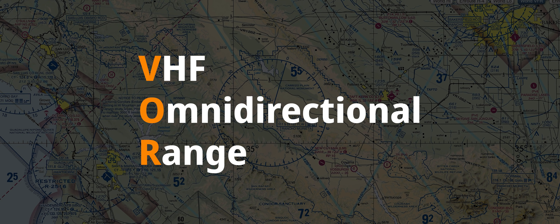The O in VOR stands for Omnidirectional, which means just in all directions. So this equipment, the VOR, actually emits in 360 degrees, and we can use these radio frequencies, tune into them, and the equipment inside our aircraft will let us fly to and from these VORs on a specific heading.